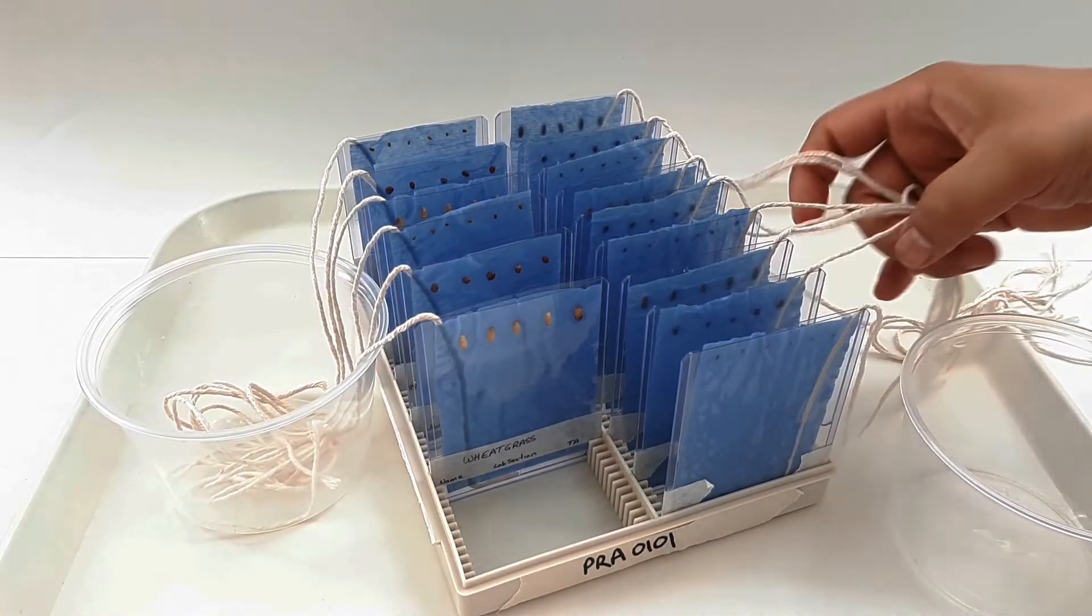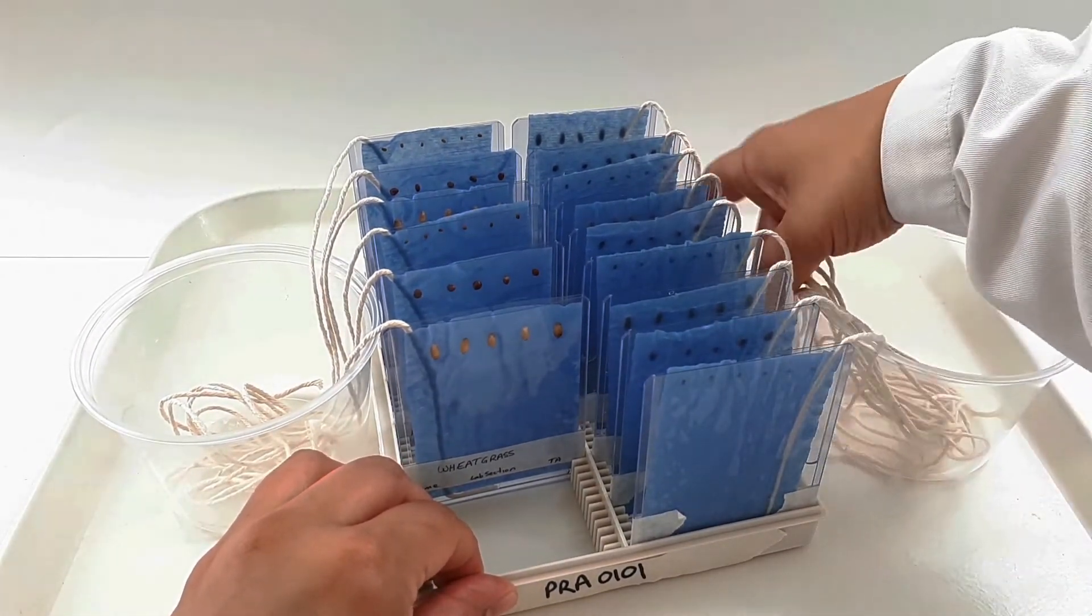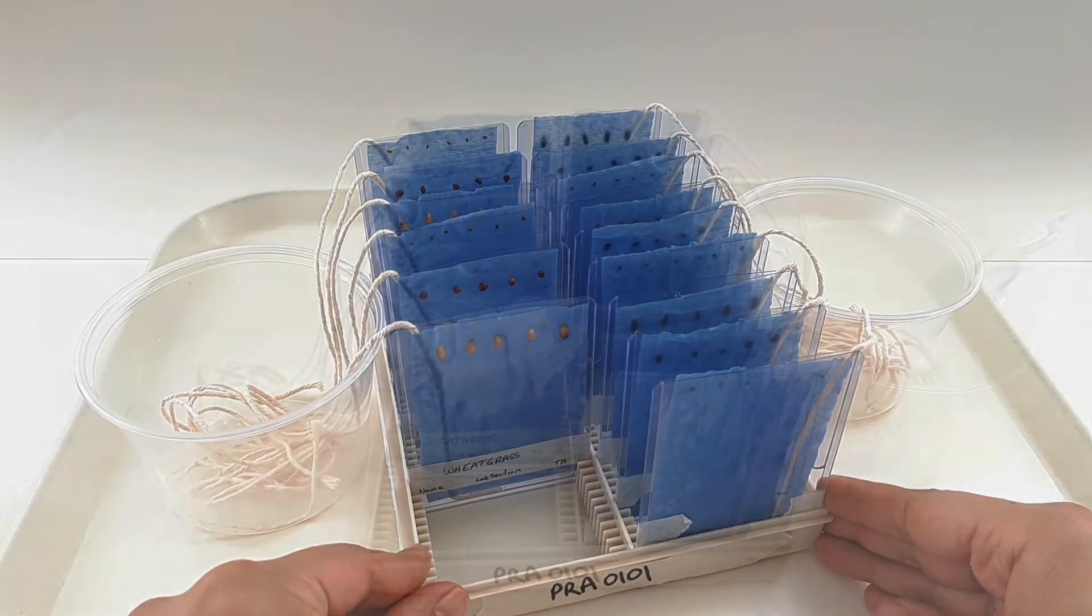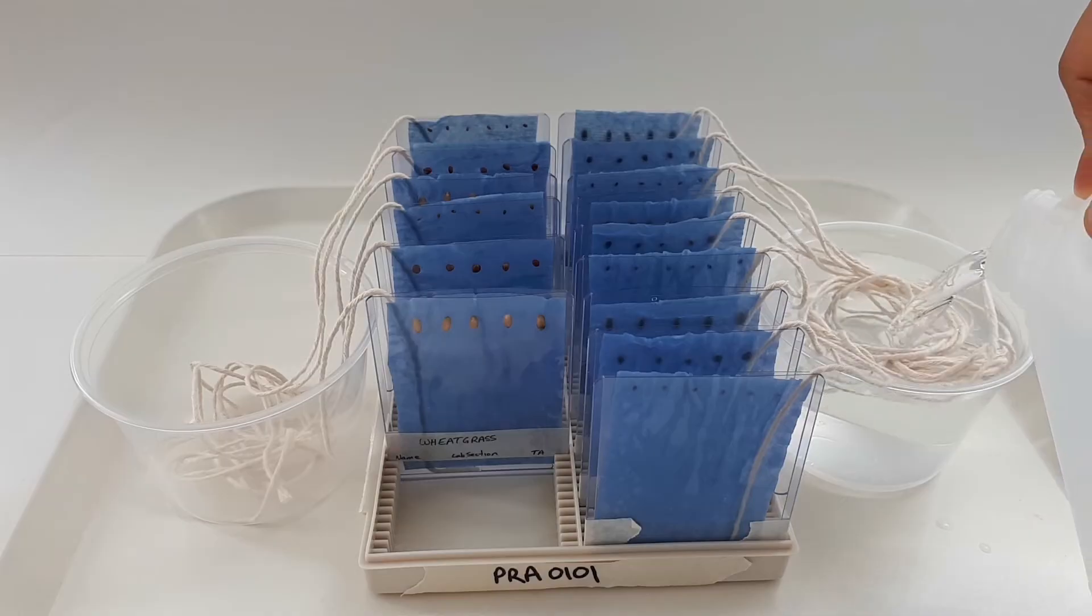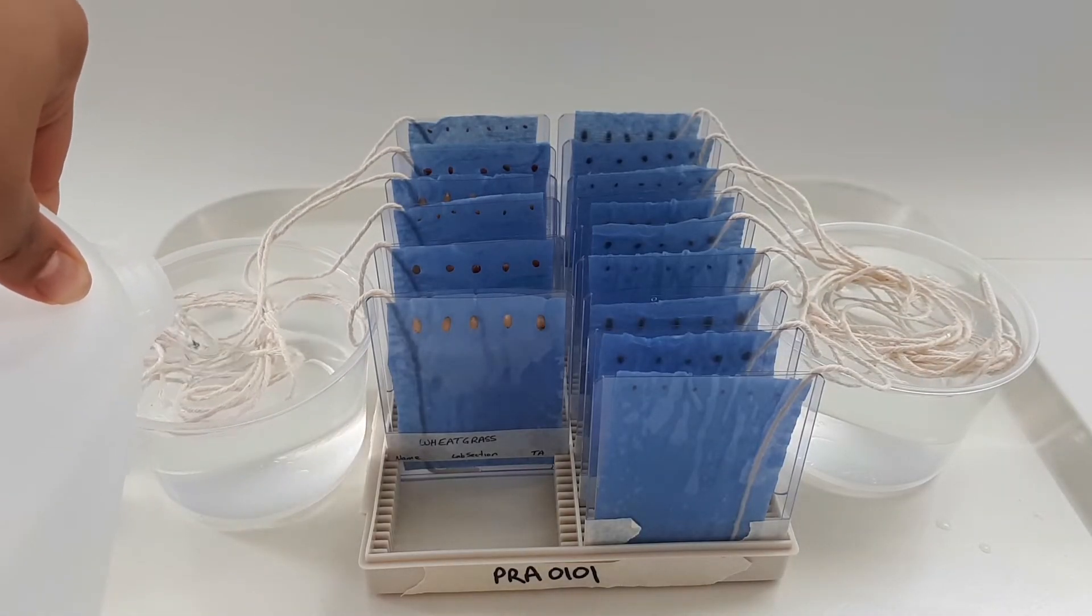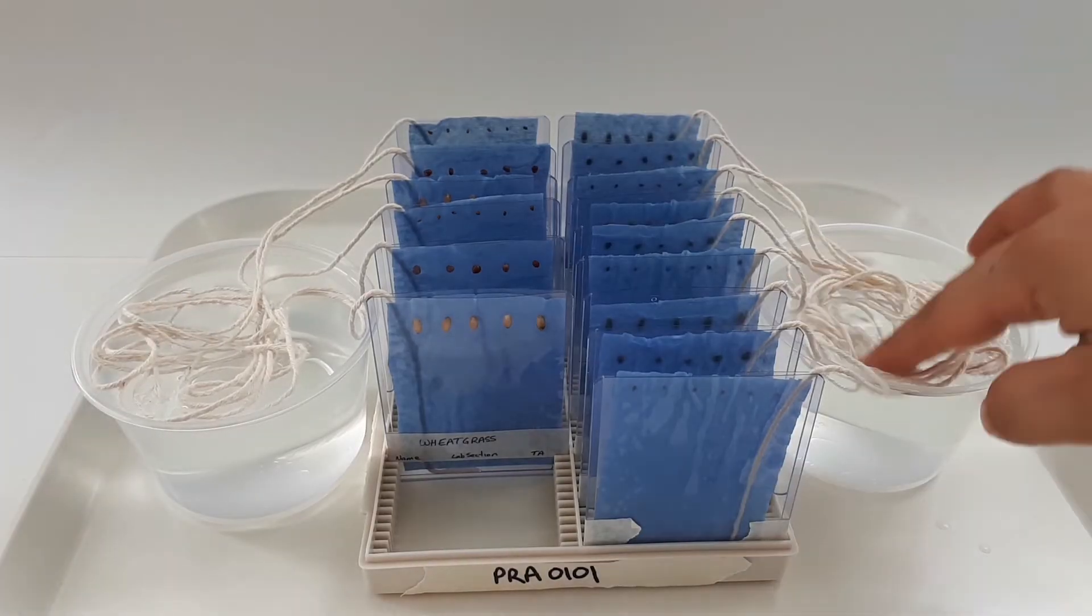When all of the plant pockets for the class have been collected, your TA will put all of the string ends into containers with dechlorinated water. Over time, the water will move through the string via capillary action. This will keep the plant pockets watered.